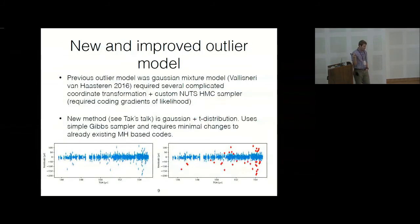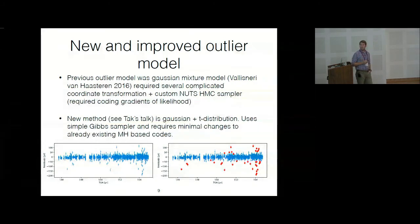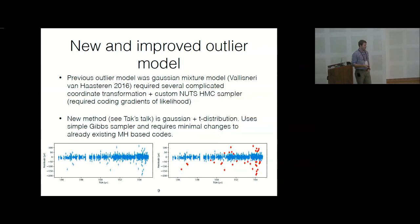One application of the hierarchical likelihood is outlier modeling — something Tack and I have worked on. Using a Gaussian and Student-T distribution mixture model, we can identify outliers in the data. This is real data from one of our messier pulsars. When you use this outlier model, indicator variables tell you which data points are outliers, and it picks them up pretty well. Tack will go over the methods in the next talk.